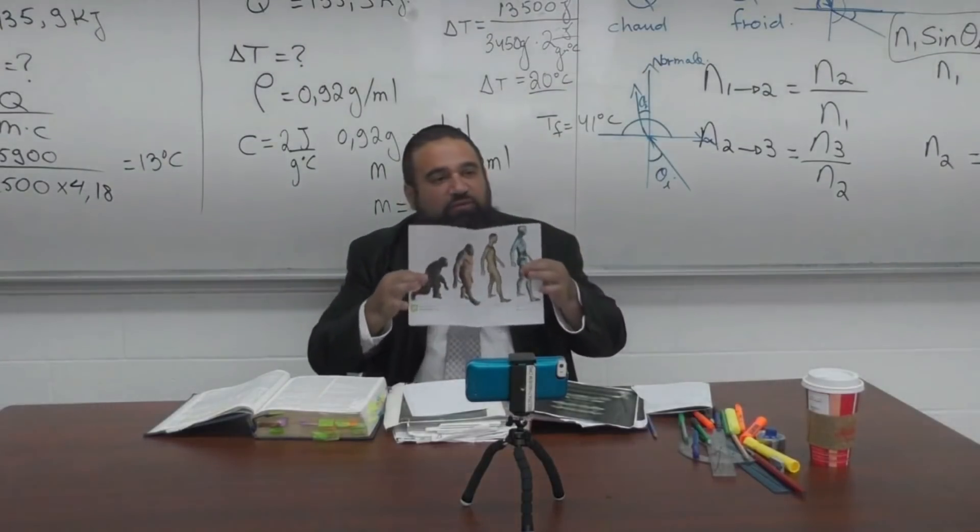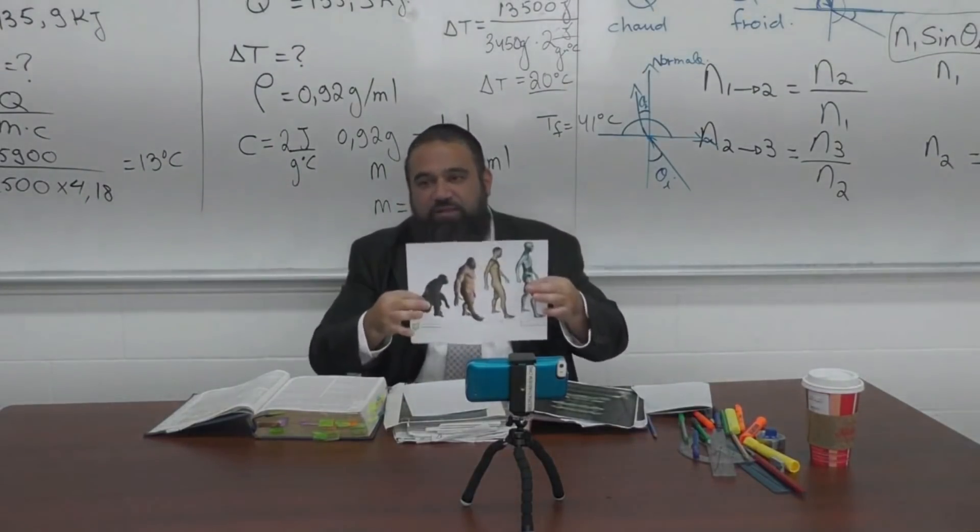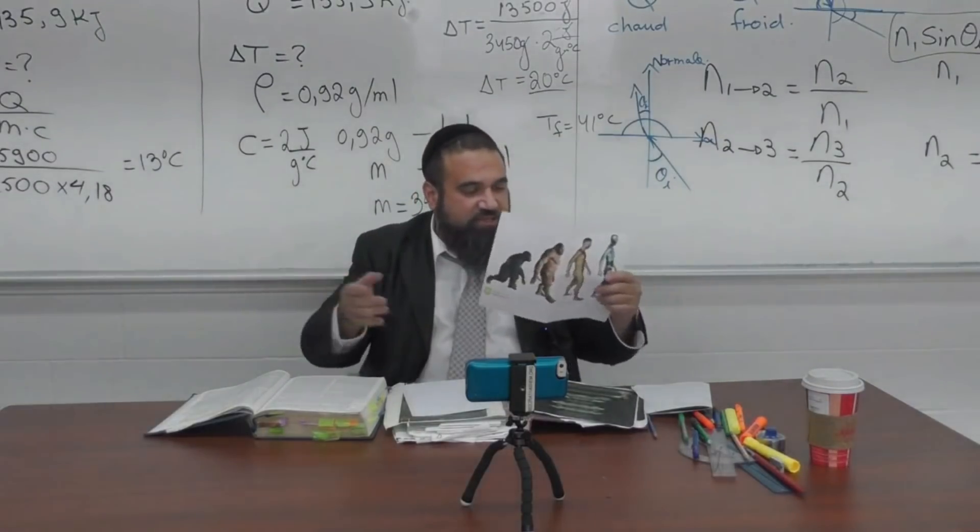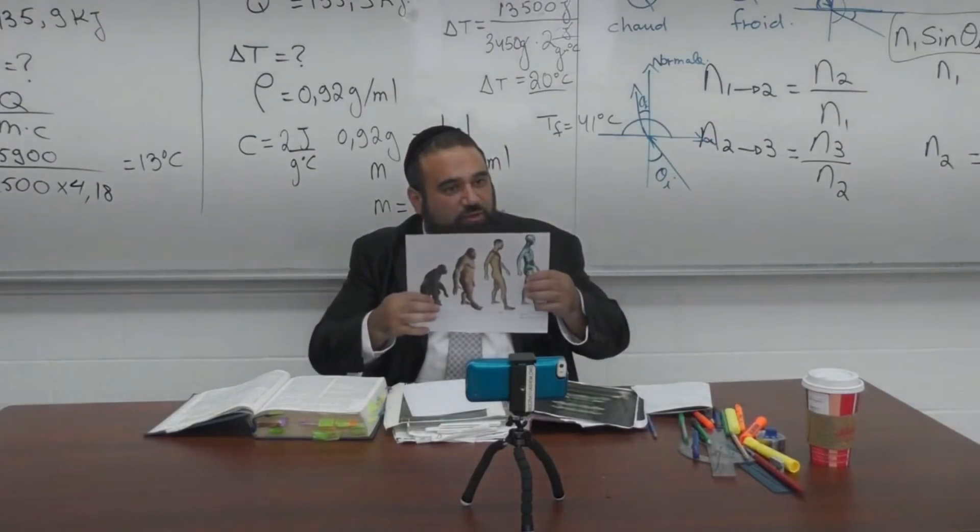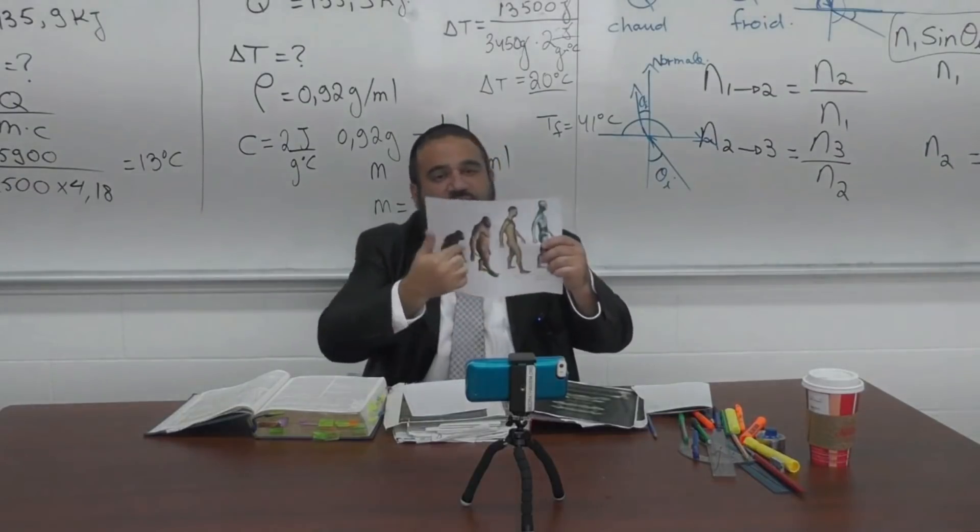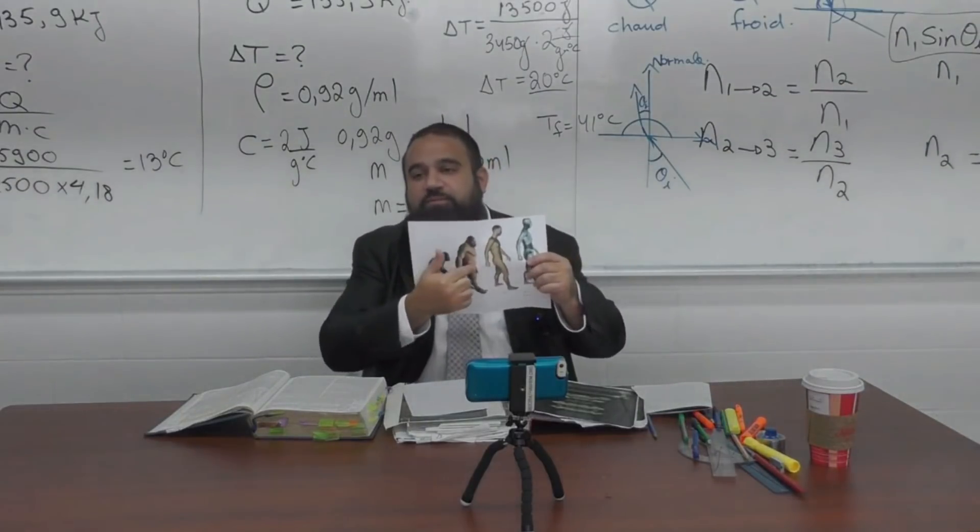In reality, if the monkey is the first step and we are the last step, you have to have one of two equations to make it valid. One, the monkey is not here, which means it's nonsense. Two, all of the steps in between have to be here - all of them.